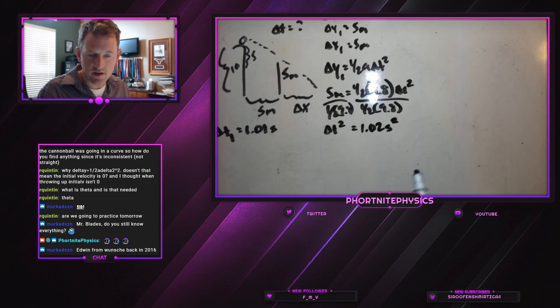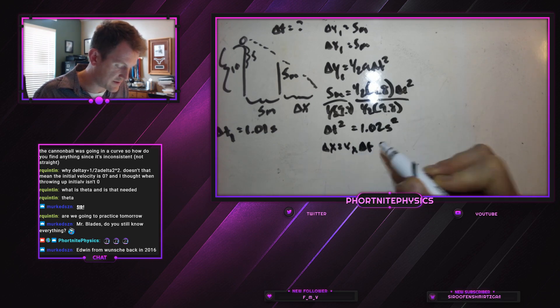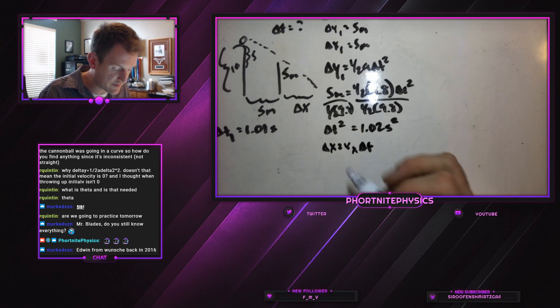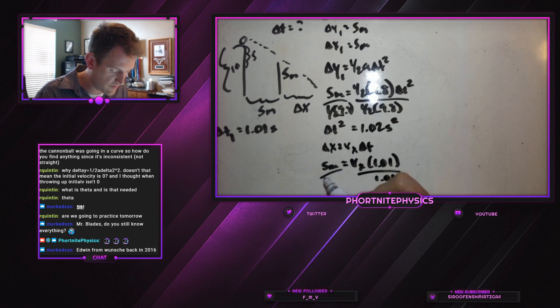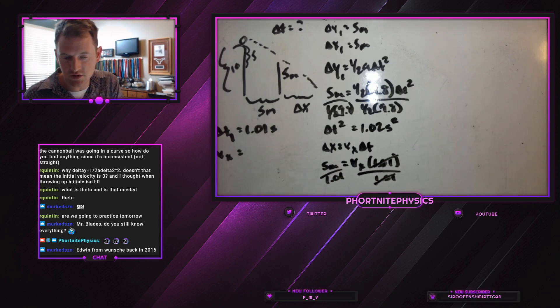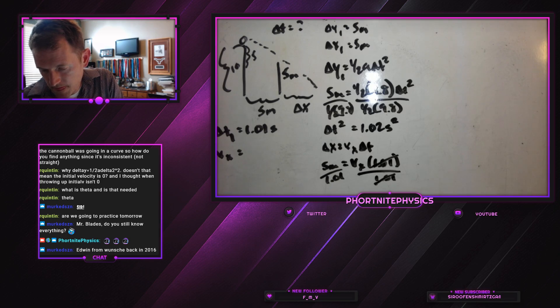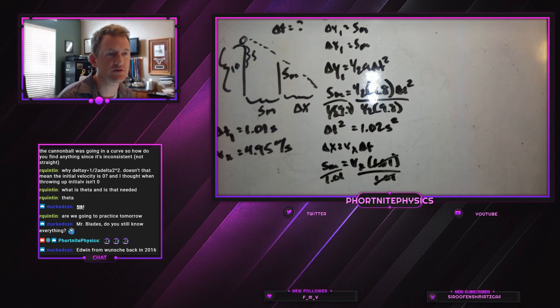So our delta X is equal to our velocity X multiplied by our time. We know our delta X and we know our time, so we can solve for our VX. So 5 meters equals VX multiplied by 1.01 seconds. And if we divide both sides by 1.01, our VX is equal to 4.95 meters per second. That's how hard the ball is thrown from its perch at the very top.